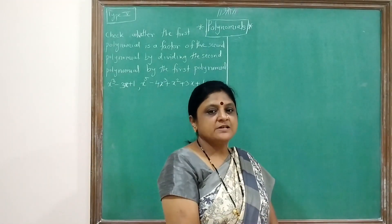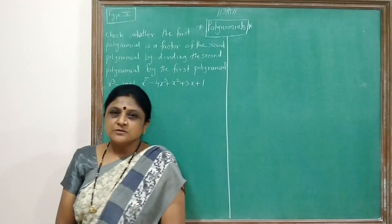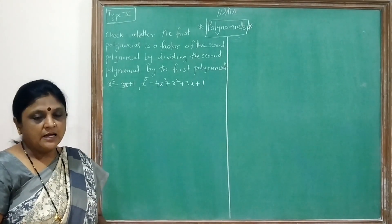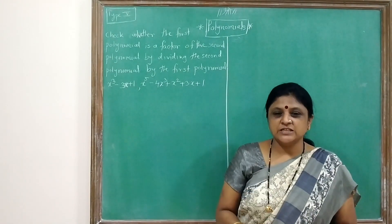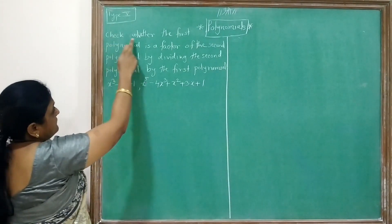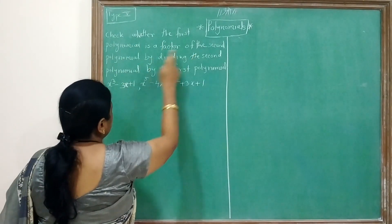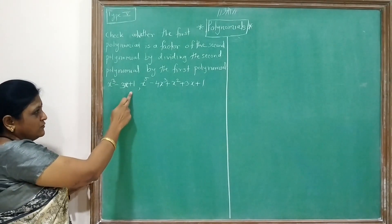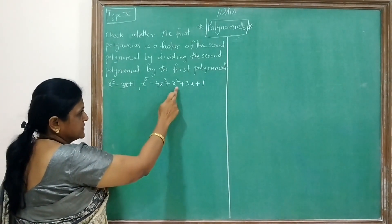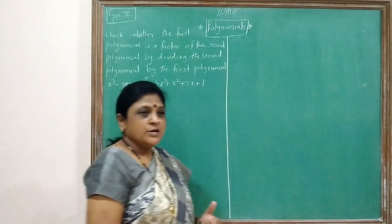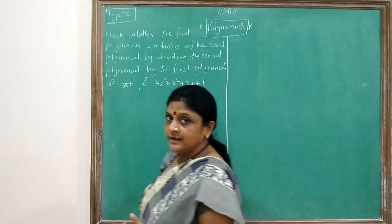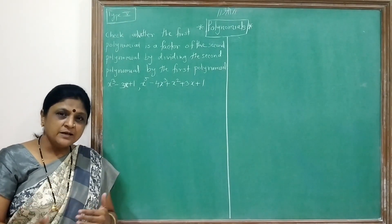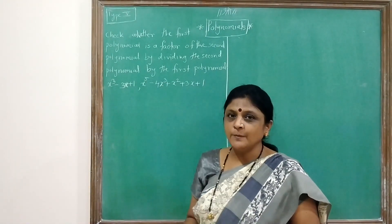Hello students. In the previous lecture we have seen the numericals on how to find a quotient and a remainder. In this lecture we are going to see the type which is: check whether the first polynomial is a factor of the second polynomial by dividing the second polynomial by the first. If the remainder is 0, then it is a factor of p(x). If the remainder is not 0, then it is not a factor of p(x).